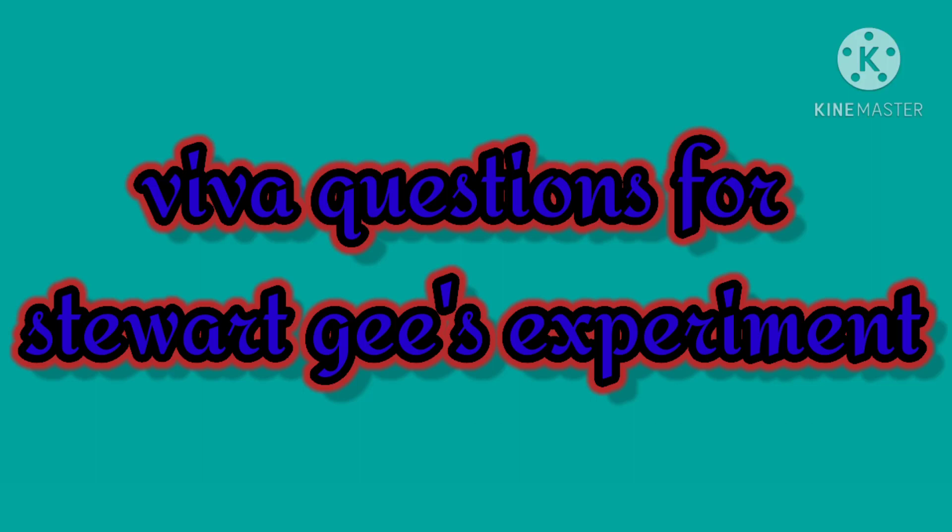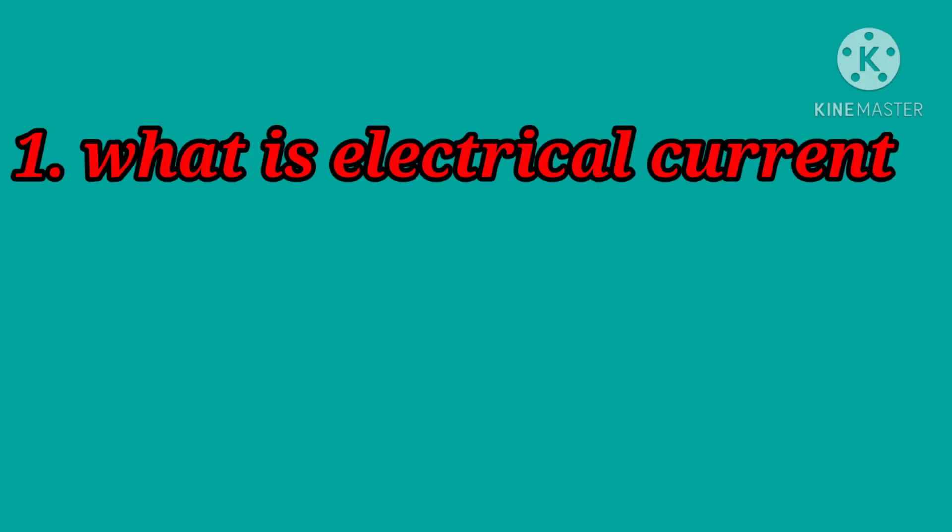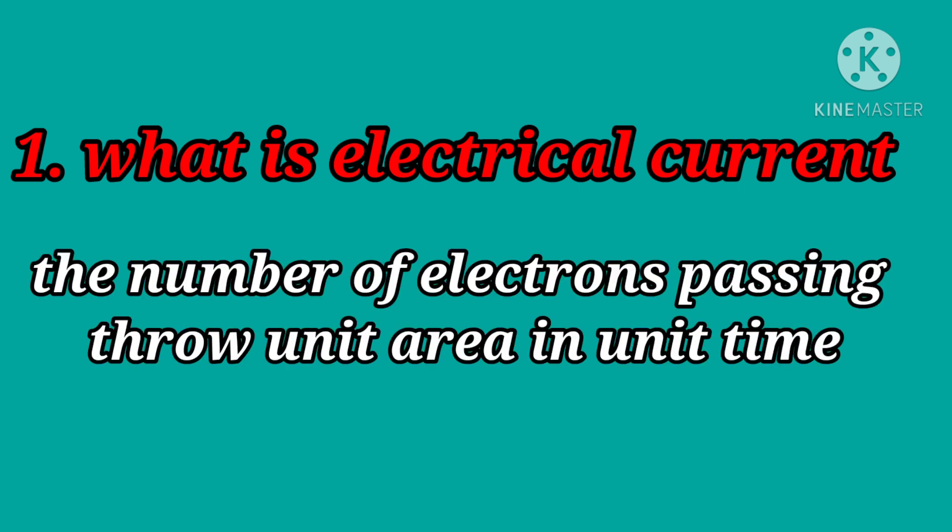Why were the questions for Stuart Gies' experiment? What is electrical current? The number of electrons passing through unit area in unit time is called electrical current.